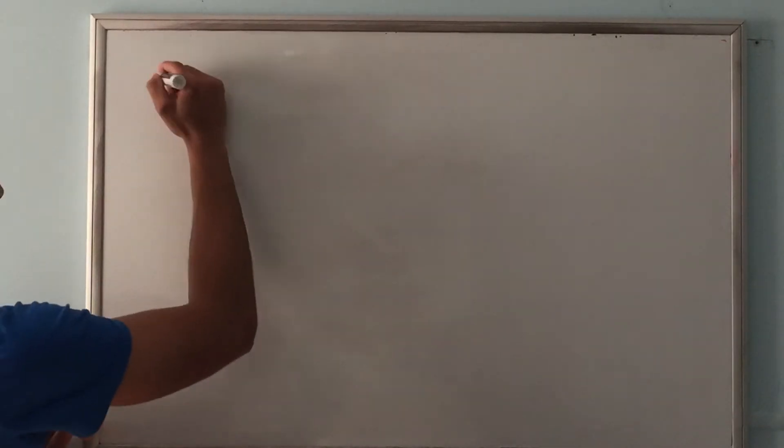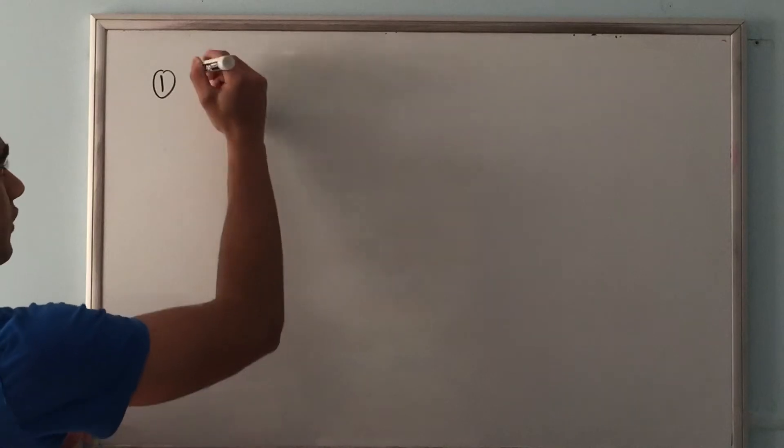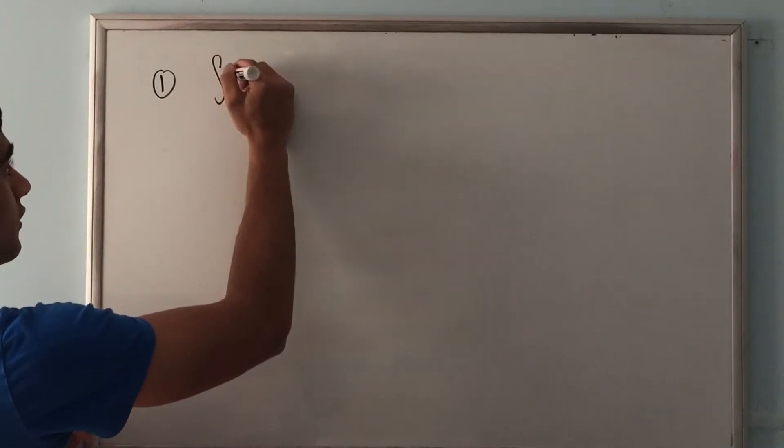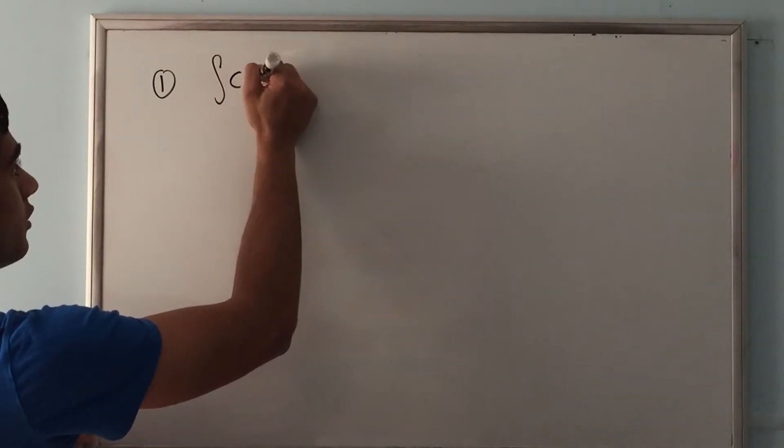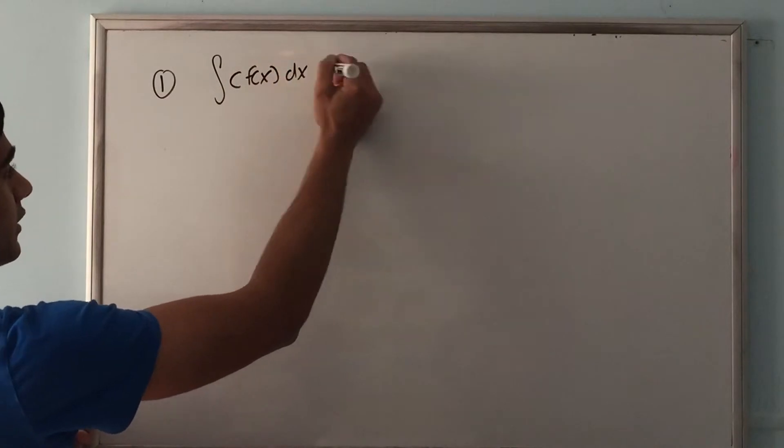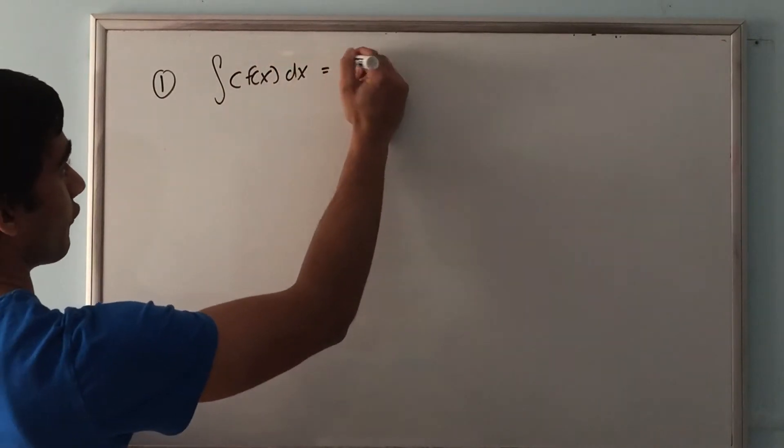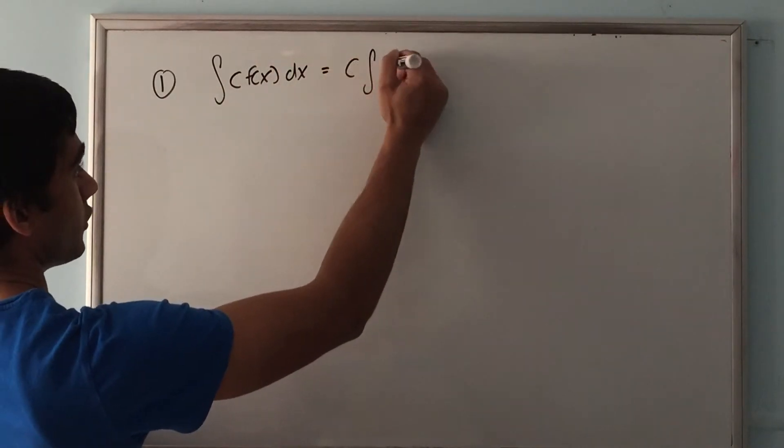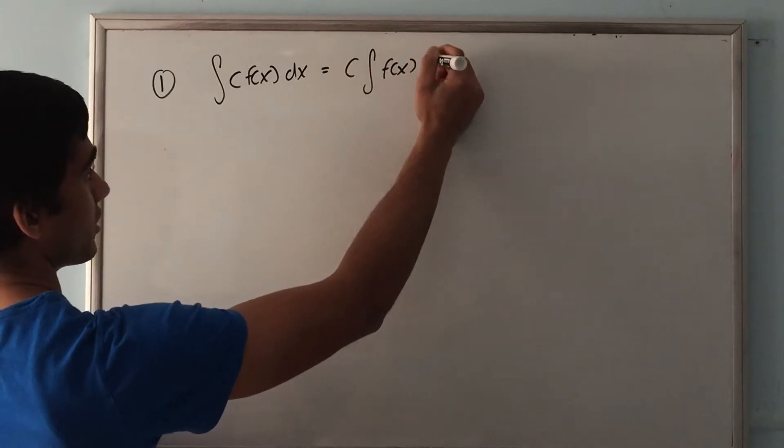In this video I'm going to go over the four simple rules of integration. The first one is the constant rule, which basically says if you have a constant multiplied by a function, the integral of that entire entity equals the constant pulled out in front of the integral times the integral of the function itself.